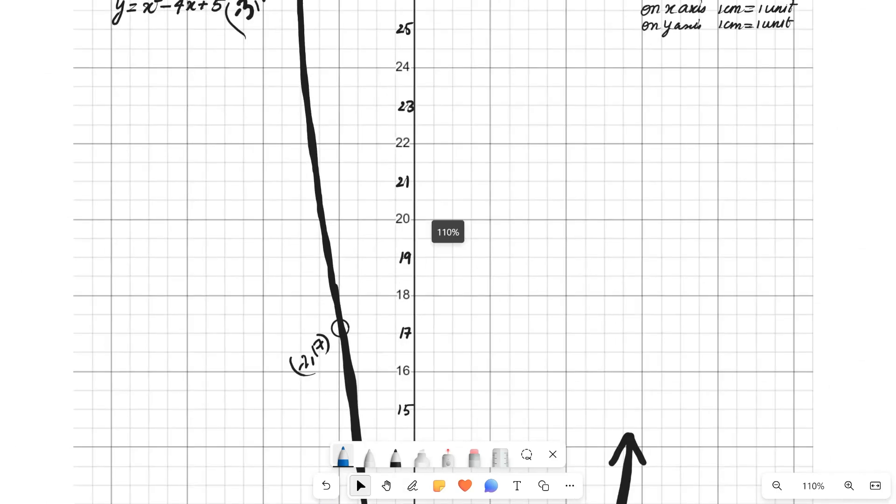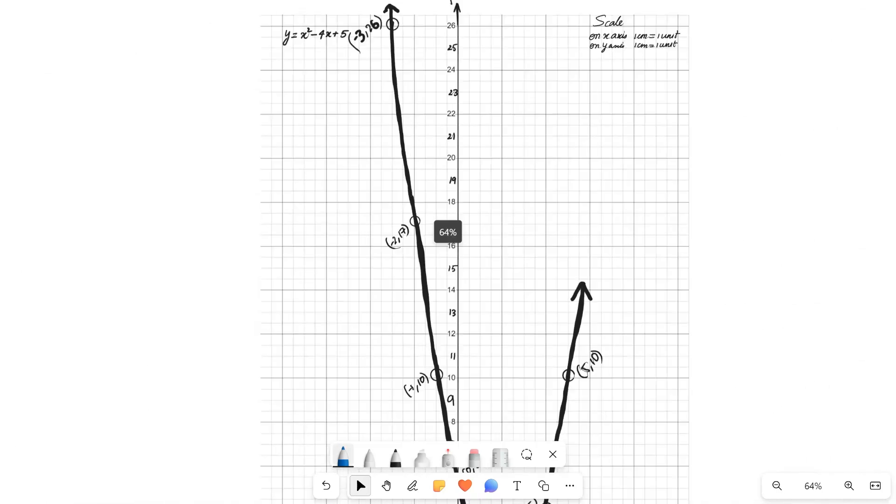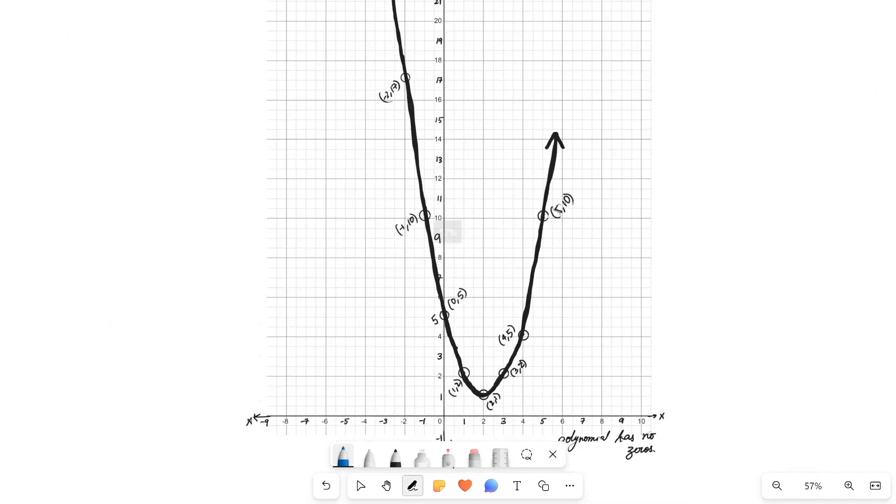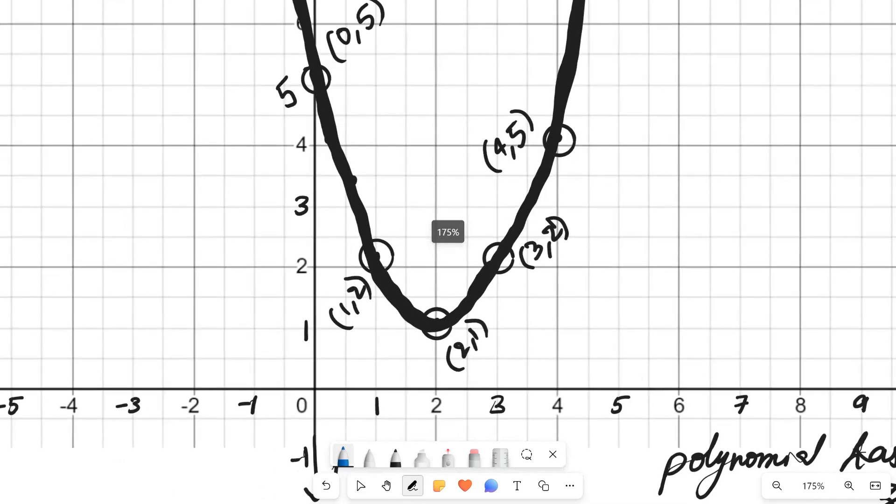So if we join all the points we would get the graph like this. So we see that the graph is not touching x-axis or not intersecting x-axis.